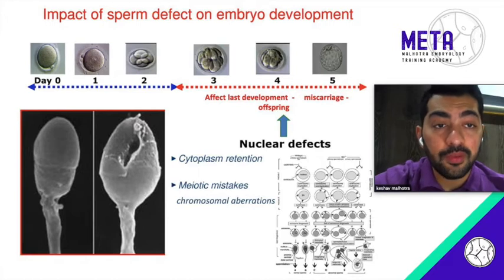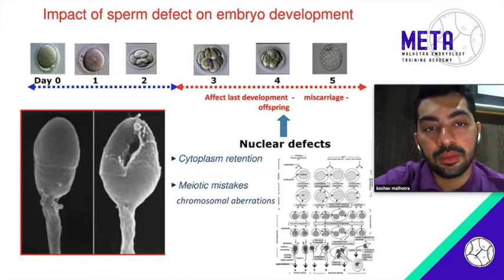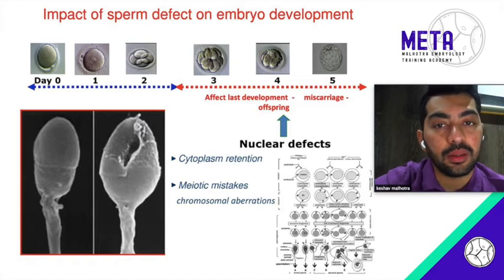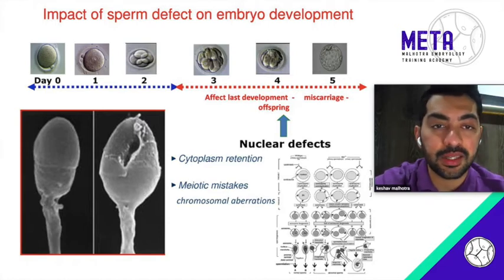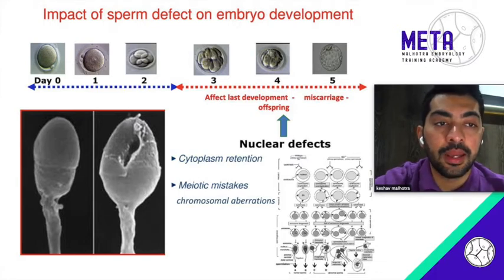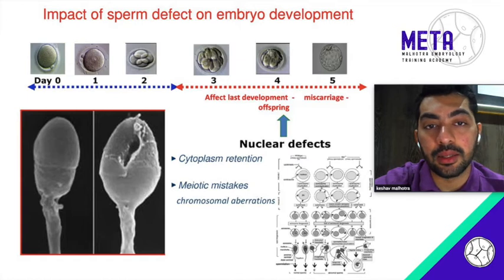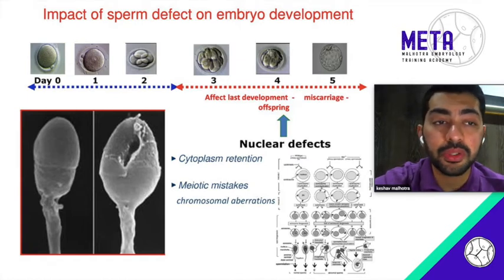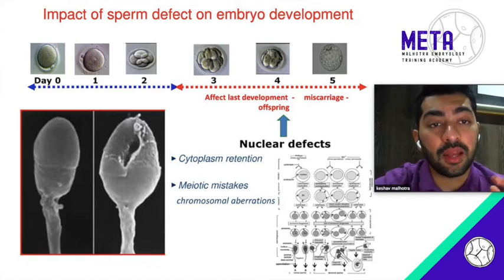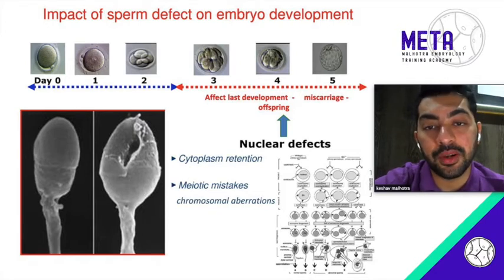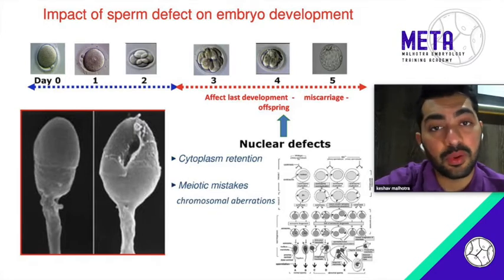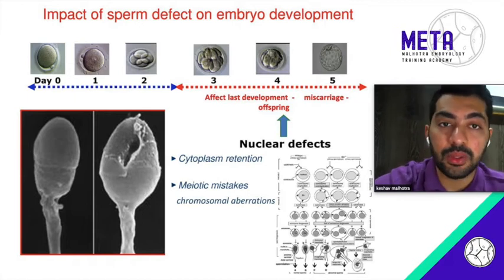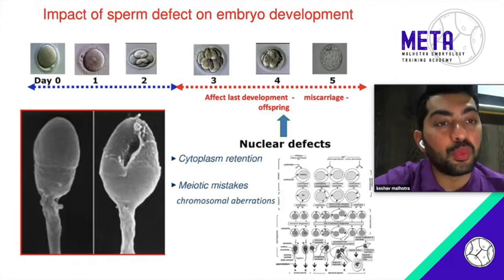Whenever you have a patient who is having problems like errors of embryonic development or facing miscarriages even with normal conception, it is very important to analyze the male partner as well. Most of the time we only keep focusing on the female parameters — on the egg — and we don't really look for these subtle changes which are actually evident on the semen analysis and sperm morphology analysis. These are things we need to start considering to improve our practices.